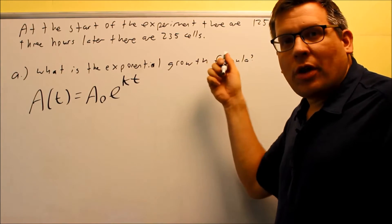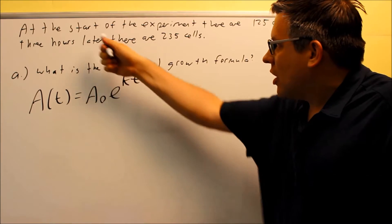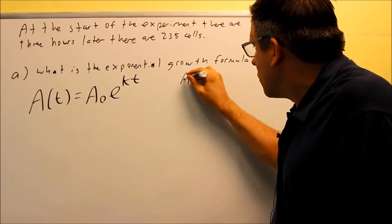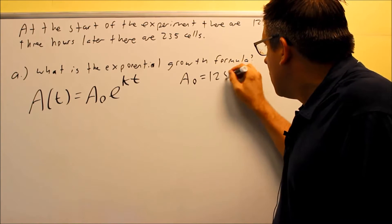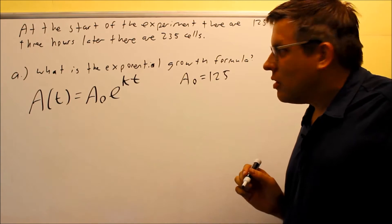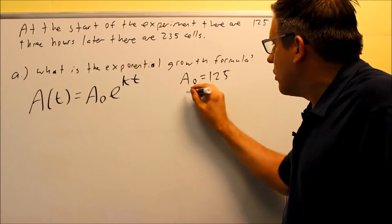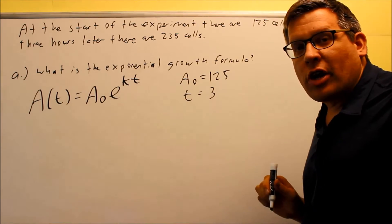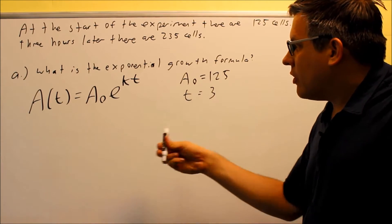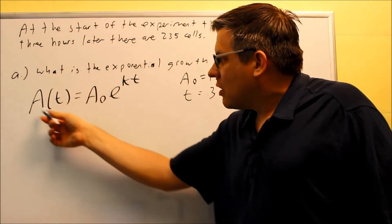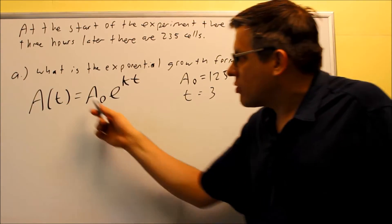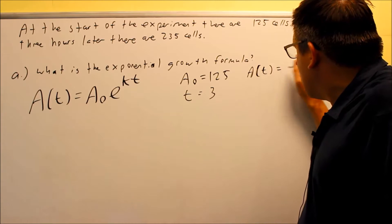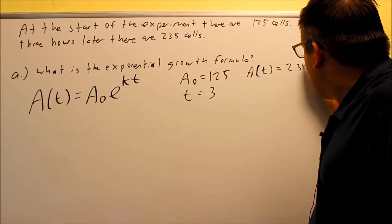Let's look at what information was provided for us in this question. It said at the start of the experiment, so that's your initial. That's your A₀. So A₀ is going to be 125 cells. Next it says three hours later, so our time is going to be three hours. Then there's 235. So that 235 is going to represent how many cells there are after three hours. So that would be like your current population. So my A(t) is going to be, in this case, 235 cells.